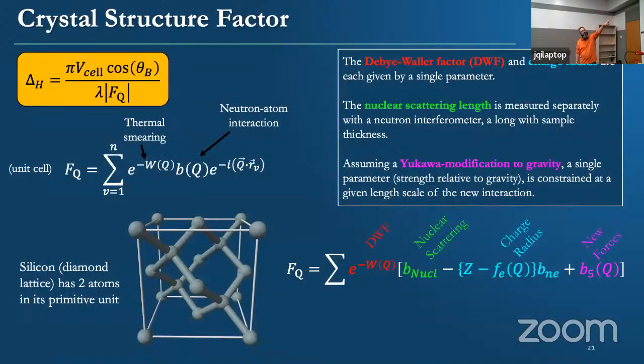What are we measuring? We're interested in the SF(Q), which is the structure factor. It's essentially the interaction summed up over a unit cell of the silicon. That's a unit cell of the silicon, a diamond shaped lattice. These are the terms that we're interested in. The red one is the Debye-Waller factor, which has to do with the thermal motion of the atoms. You also get the B nuclear scattering, which is primarily the dominant effect. You get this other term related to the neutron and electron interaction - that gives you a charge radius. And then lastly, B sub five, which is another function of Q, which gives you new forces.